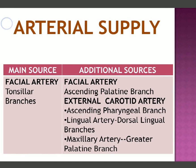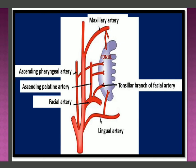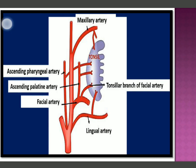The arterial supply: the main source is the facial artery through its tonsillar branch. Additional sources include the ascending palatine branch (also from the facial artery), the ascending pharyngeal branch from the external carotid artery, the dorsal lingual branch from the lingual artery, and the greater palatine branch from the maxillary artery. All these branches, especially the tonsillar branch, supply the palatine tonsils.